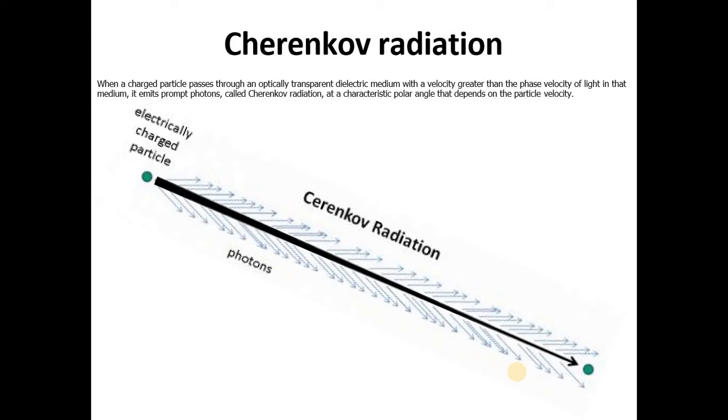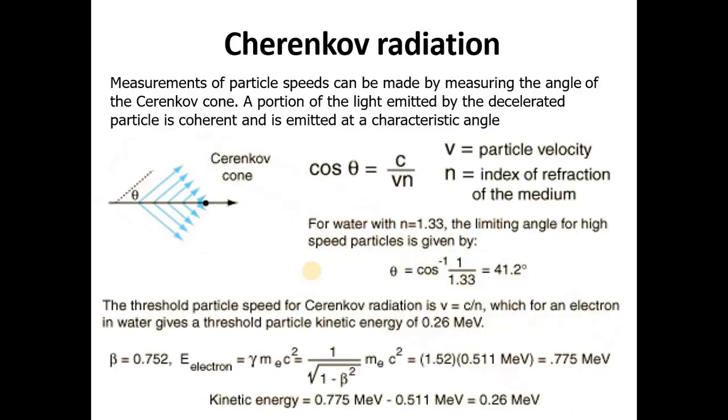When a charged particle passes through an optically transparent dielectric medium with a velocity greater than the phase velocity of light in that medium, it emits photons called Cherenkov radiation at a characteristic polar angle that depends on the particle velocity. You can see that when an electrically charged particle passes through an optically transparent dielectric medium with a velocity greater than the phase velocity, these photons are produced. And these photons are called Cherenkov radiations. The polar angle which were made through measurement of particle speeds can be made by measuring the angle of Cherenkov cone. The portion of the light emitted by the decelerated particle is coherent and is emitted at a characteristic angle. This is given by cos theta equals 1 over n beta, where n is the index of refraction and v is the particle velocity, c is the speed of light.